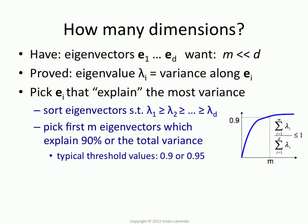And you look for m such that the sum of the m largest eigenvalues is 90% of the total sum, which is the total amount of variance in the system. That's one way to do it.